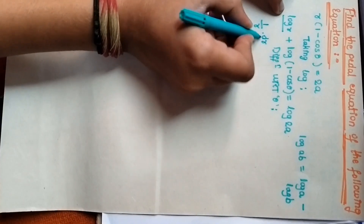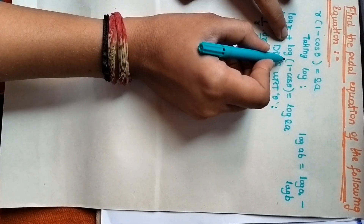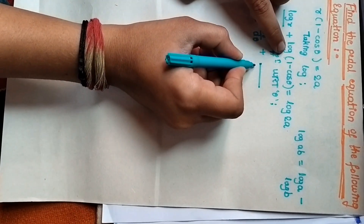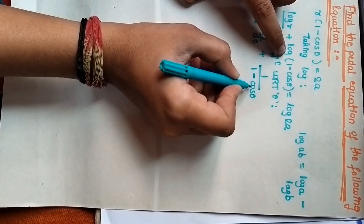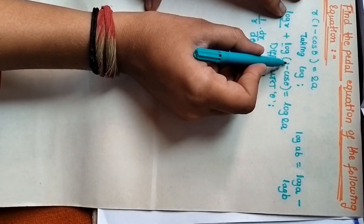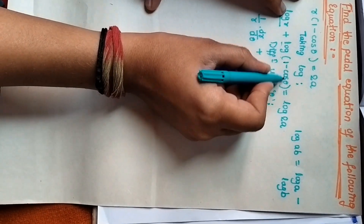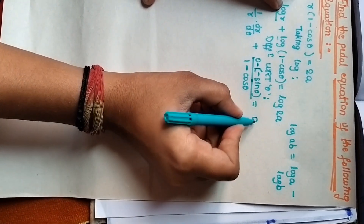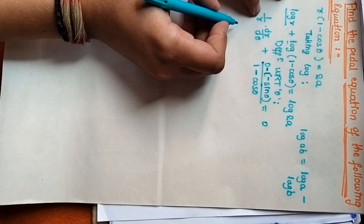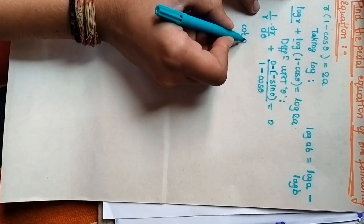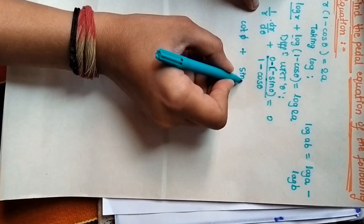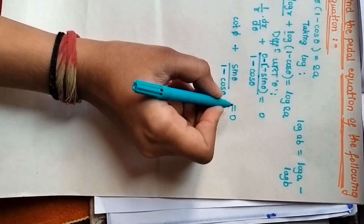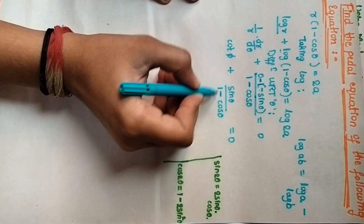The next step is differentiation with respect to theta. We know that differentiation of log r with respect to theta is 1/r dr/dθ. Plus, we differentiate the outside function — the log function — differentiation of log is 1 over (1 minus cos theta). We differentiate the inside function: differentiation of 1 is 0, minus differentiation of cos theta is minus sin theta. Differentiation of log 2a is 0 because it is a constant.